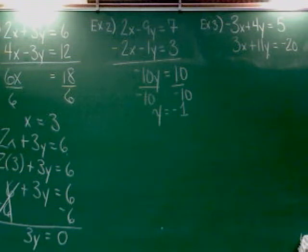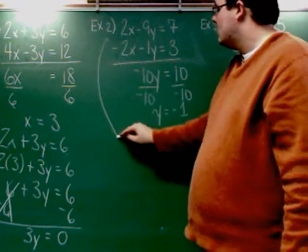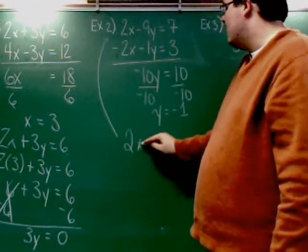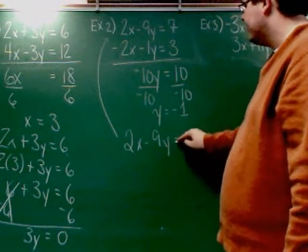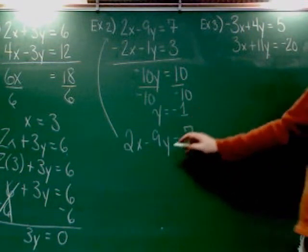So now you pick an equation you want to plug it back into. You can choose to plug it back into the top or you can choose to plug it into the bottom. Jackson, top? Top. Fine. So I'm going to take this top equation. Two X minus nine Y equals seven. And I'm going to change Y into negative one.